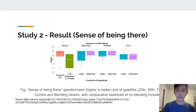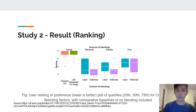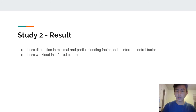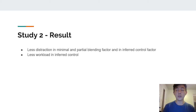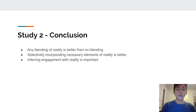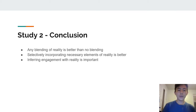Looking at the sense of being there, minimal and partial blending performed better, and inferred control also performed better. The same was true for the ranking. For distraction, there was minimal distraction in minimal and partial blending with inferred control. There was also less workload in inferred control since the user did not have to press any button. The conclusion from this experiment was that it is better to add any portion of reality than none at all, but selectively incorporating only necessary amounts of reality is better. Inferring engagement with reality is also really important, as shown by the results.